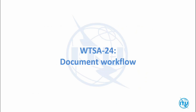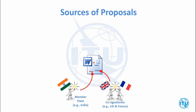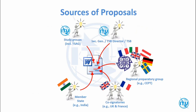There are many sources of proposals: individual member states, co-signatories, the six regional preparatory groups submitting common proposals, the Secretary General, the TSB Director, study groups including TSAG, and sector members. The vast majority discussed in depth come from regional preparatory groups and study groups.